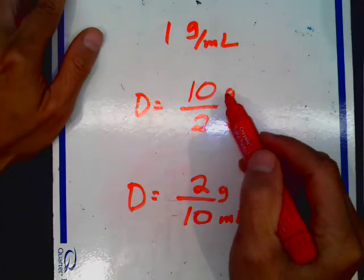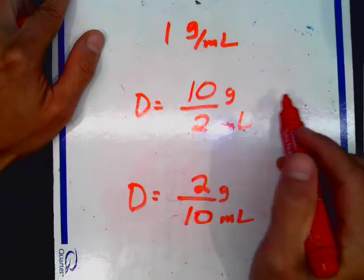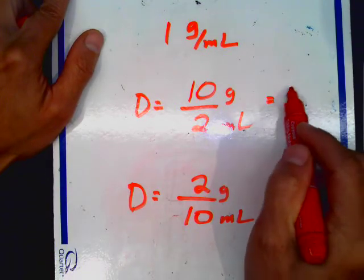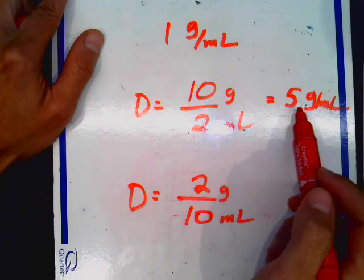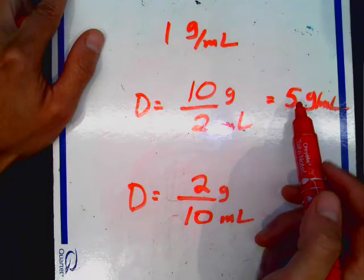So if you have the numerator more than the denominator, in this case 10 divided by 2 equals 5 grams per milliliter, any time the top is bigger than the bottom, the answer over here is going to be more than 1.